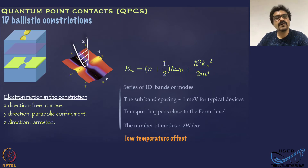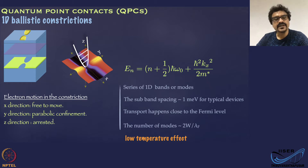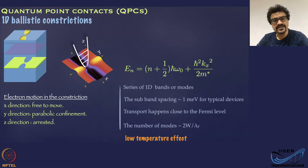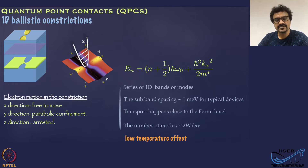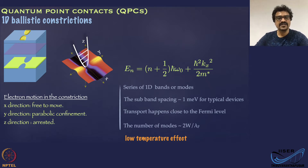Quantum point contacts are one-dimensional ballistic constrictions where the transport is one-dimensional. These devices are usually realized on a two-dimensional platform. You start with a three-dimensional system and go to one-dimensional by various technologies we have discussed, such as semiconductor heterostructures or two-dimensional layered materials. You remove one dimension from 3D to get to 2D, and then remove one more dimension to get a one-dimensional system.